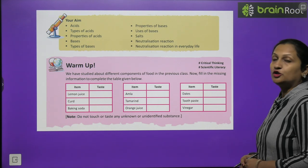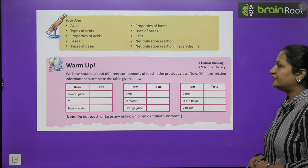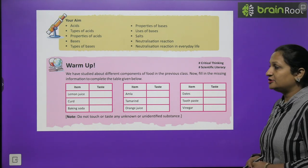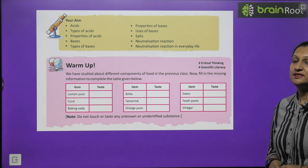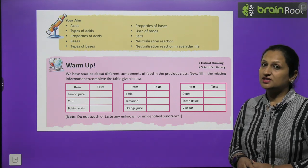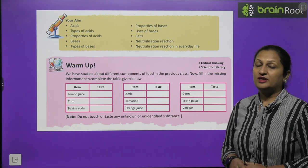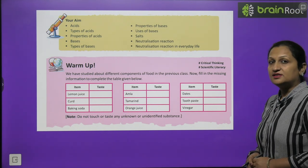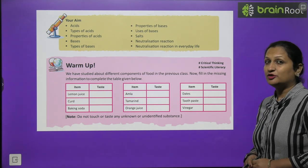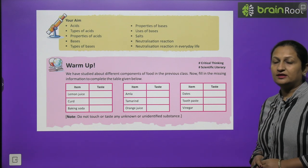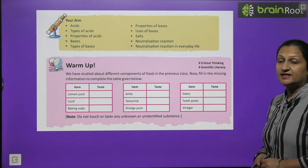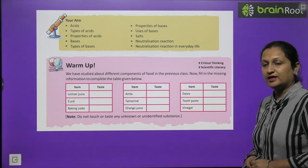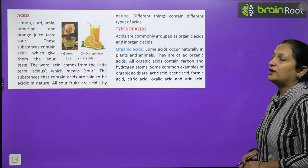Have a look on warm-up, children. We have studied about different components of food in previous class. Now fill in the missing information to complete the table given below. Lemon juice is sour in taste. Similarly, curd is also sour. Baking soda is bitter in taste. Amla is sour in taste. Tamarind is sour. Orange juice is also little sour in taste. Dates are sweet. Toothpaste is bitter in taste. And vinegar is sour in taste.